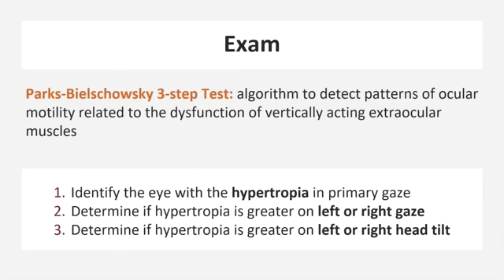Sometimes if a patient presents with double vision, it can be difficult to figure out exactly which extraocular muscle is causing the problem. The Park-Skoschowski three-step test is an algorithm that allows the clinician to determine which extraocular muscle is paretic and therefore causing the patient's symptoms. Importantly, this test is unreliable if multiple extraocular muscles are dysfunctional and is most useful for patients with acquired hypertropia secondary to a single muscle palsy. The three steps include identification of the eye that is hypertropic in primary gaze, determining if the hypertropia is worse in left or right gaze, and determining if the hypertropia is greater with left or right head tilt. Each step allows you to identify the extraocular muscles that may be involved and, when taken together, allows you to identify the paretic muscle causing the patient's symptoms.